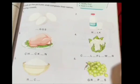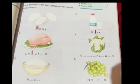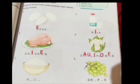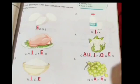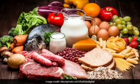Let us begin the lesson with an activity. Please open your science textbook and turn to page number 71. Look at the pictures and complete their names: eggs, milk, chicken, cauliflower, rice, and grapes. These are the different types of food that we eat. Children, do you know from where we get our food?